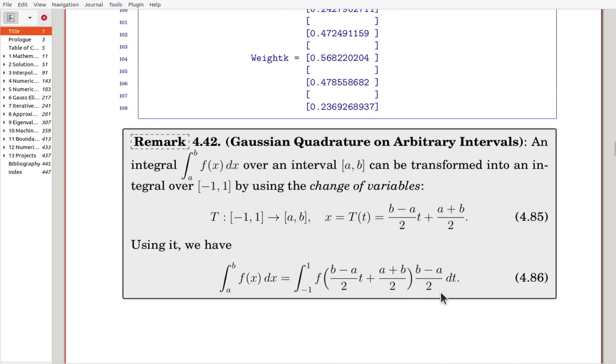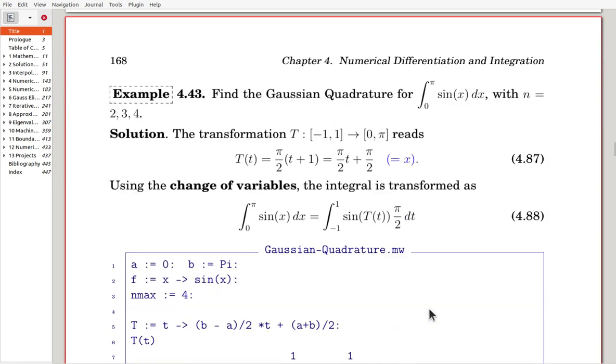Now by using the known weights and nodal points, we can get the quadrature. See this example. Find the Gaussian quadrature for zero to pi sine x dx with n as 2, 3, 4. So here we have transformation, minus one to one to zero to pi, that's given in this way. So that using the change of variables, the integral is transformed into this one.